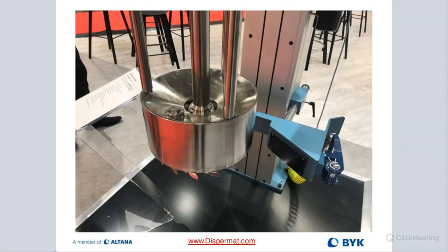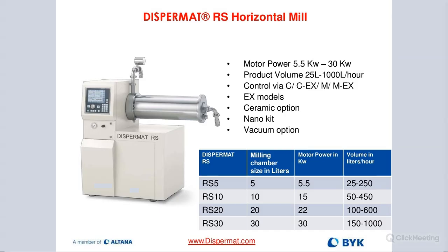The screw is for adding beads — remove it, use a funnel, and fill in beads right there. The standard mesh size is 0.5 millimeters for use with 1 to 1.2 millimeter beads, but we offer different screen sizes depending on the media you want to use and the particle size you want to achieve.